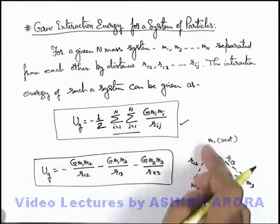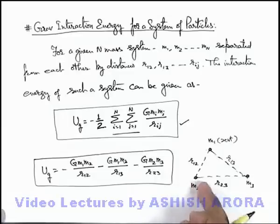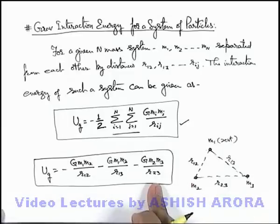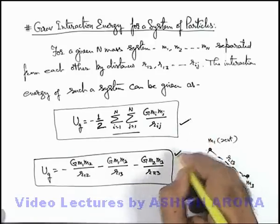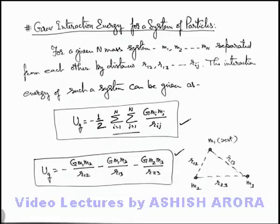By taking all the pair 1 time and writing down the expression of energy for a 2 particle system. So always remember both of these ways are good enough to find out the gravitational potential energy for a given system of particles.